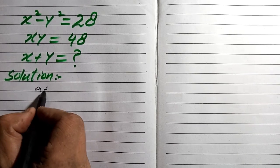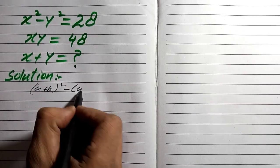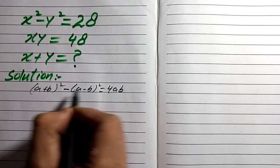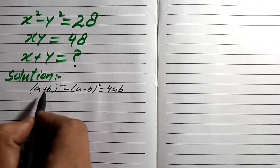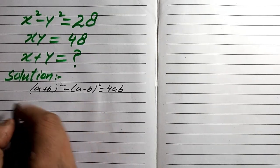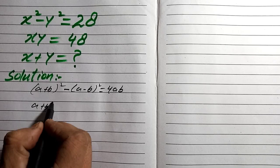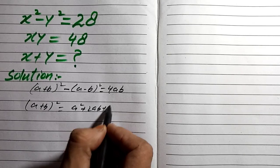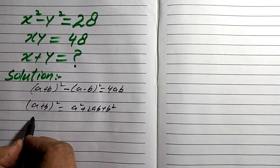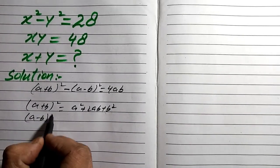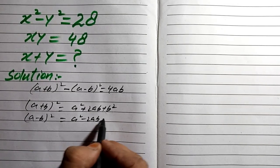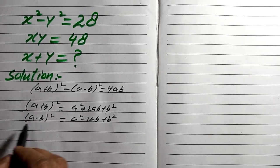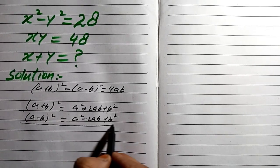We know the formula: (a+b)² minus (a-b)² equals 4ab. This comes from two formulas: (a+b)² equals a² plus 2ab plus b², and (a-b)² equals a² minus 2ab plus b². If we subtract these two formulas, we can derive the identity.